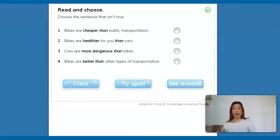After that, according to what they say in the text, let's choose the sentence that is not true. So let's read them together. Number one, bikes are cheaper than public transportation. Number two, bikes are healthier for you than cars. Number three, cars are more dangerous than bikes. And number four, bikes are better than other types of transportation.